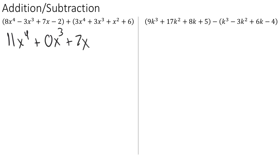And then if we look in the second polynomial, we see a similar situation with the x squared. We have an x squared in the second polynomial, and we don't have anything with an x squared in the first polynomial, so we'll need to leave that one as well. And then lastly, we have the constants on the end. Here we have a minus 2 in the first polynomial and a plus 6 in the second polynomial. Those are going to combine to become positive 4.